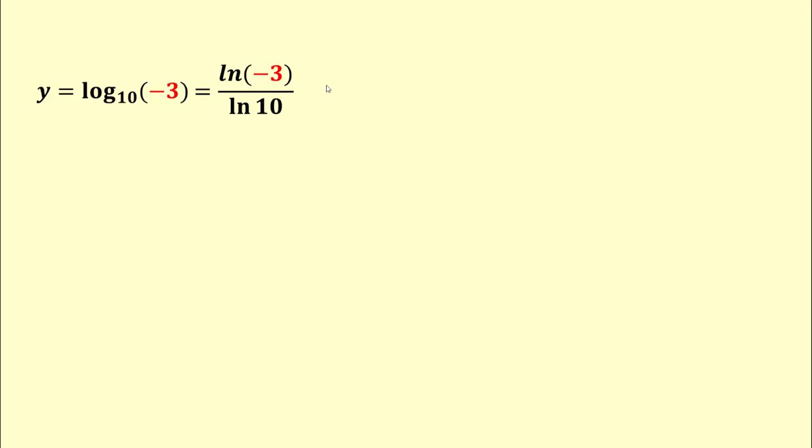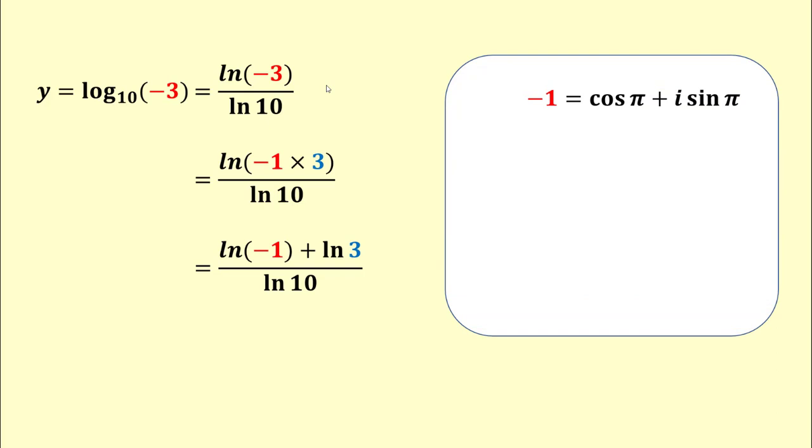Since negative 3 equals the product of negative 1 and 3, we can write natural log of negative 3 equals the sum of natural log of negative 1 and natural log of 3. Now we can write negative 1 equals the sum of the cosine of pi and iota times sine of pi.